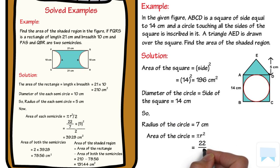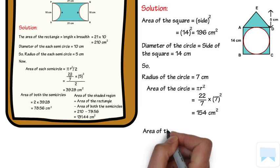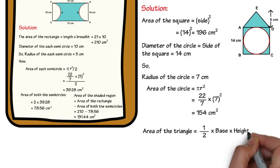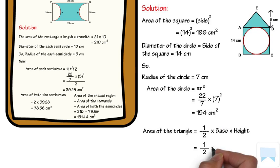Area of the circle is equal to πr², which is 22/7 times 7², equal to 154 cm². Area of the triangle is equal to 1/2 times base times height, which is 1/2 times 14 times 5, equal to 35 cm².